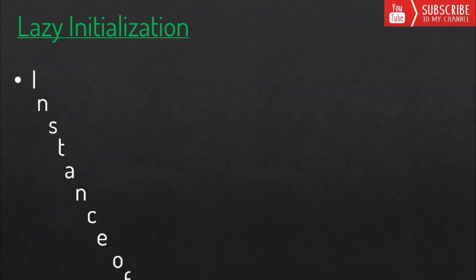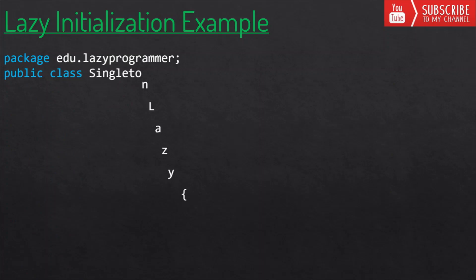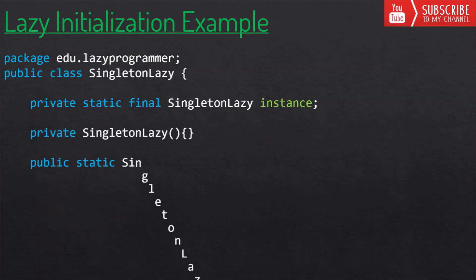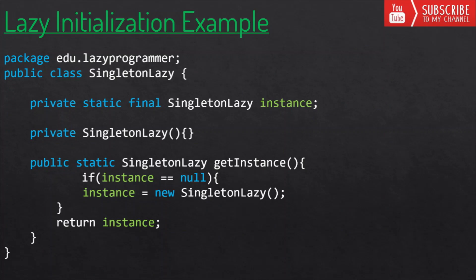Next is lazy initialization. This approach creates the instance of the singleton class only when it is required, unlike eager or static initialization. Here in the class SingletonLazy, we have a static instance variable, a private constructor, and in the global access method we check if the instance is null — if so, we create a new instance and return it. This works fine in a single-threaded environment, but in multithreaded systems multiple threads may enter the if condition simultaneously, destroying the singleton pattern and getting different instances.